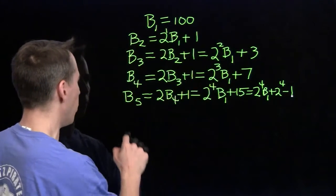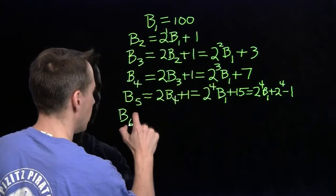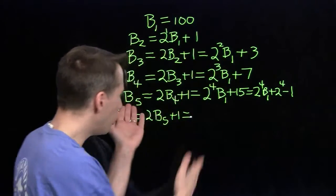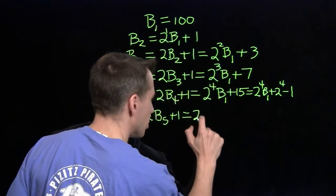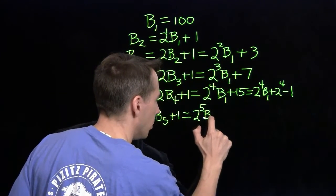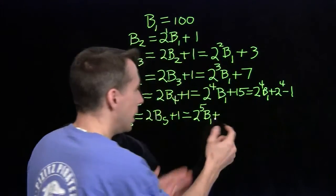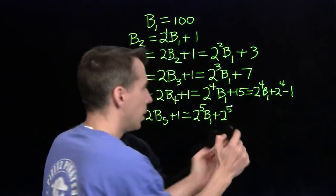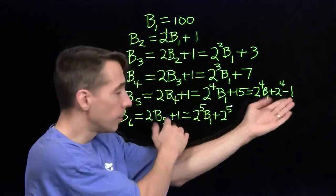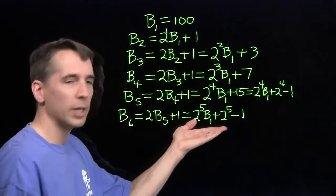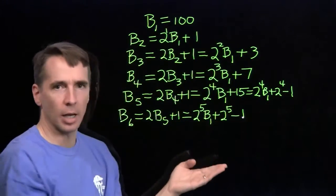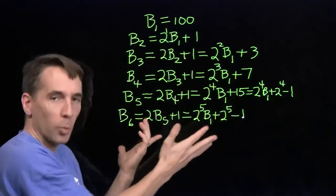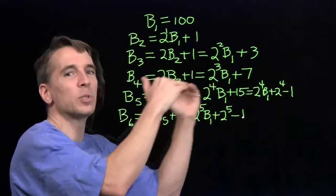Let's see if the pattern continues. b-six equals double b-five plus one. Doubling b-five multiplies two-to-the-fourth by two to give two-to-the-fifth, just as expected. We double the coefficient of b-one, double the two-to-the-fourth to get two-to-the-fifth, then double the minus-one to get minus-two, and the plus-one at the end gives minus-one overall. The pattern continues: when we go to b-seven, we'll get two-to-the-sixth times b-one plus two-to-the-sixth minus one.